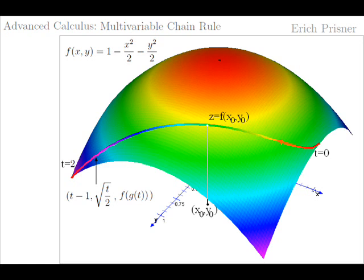That means that when we are at coordinates x₀ and y₀, we are at a height of c equals f(x₀, y₀). The composed function f∘g, defined by (f∘g)(t) = f(g(t)), expresses our height in terms of time. It is an ordinary Calculus 1 function with one input t and one output f(x(t), y(t)).